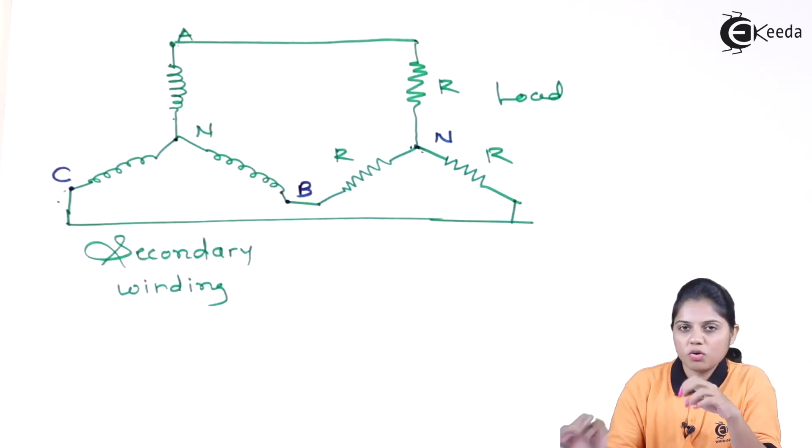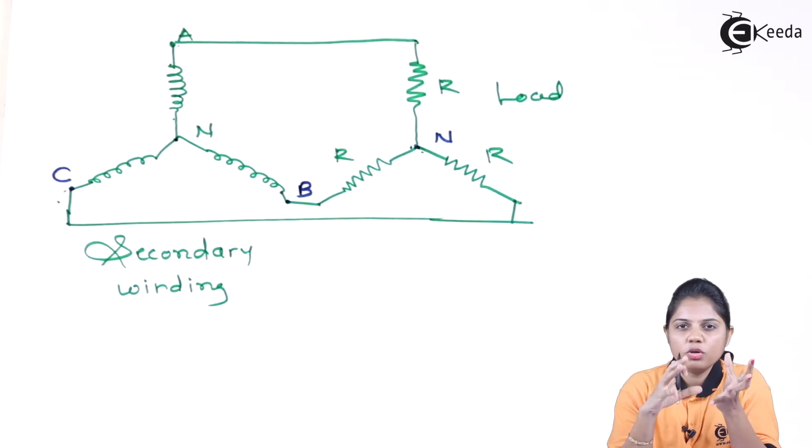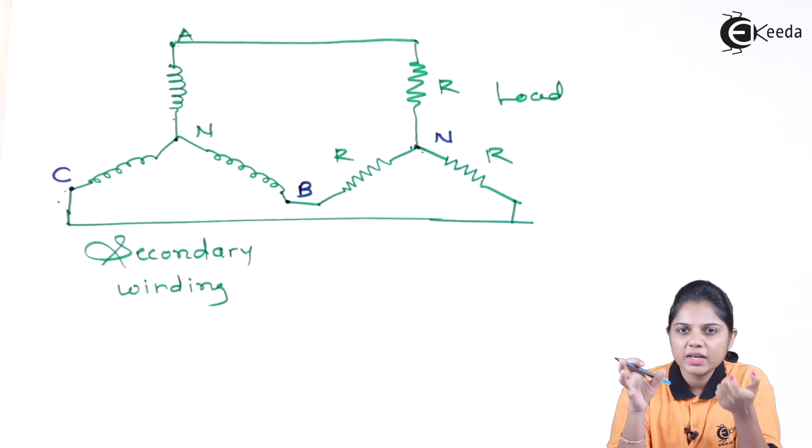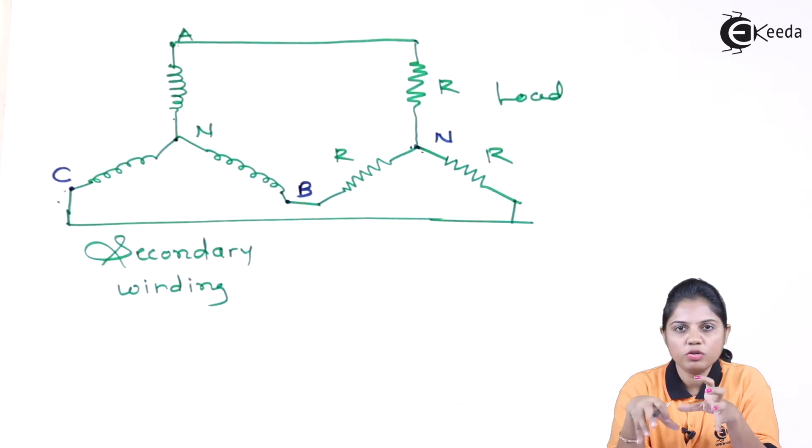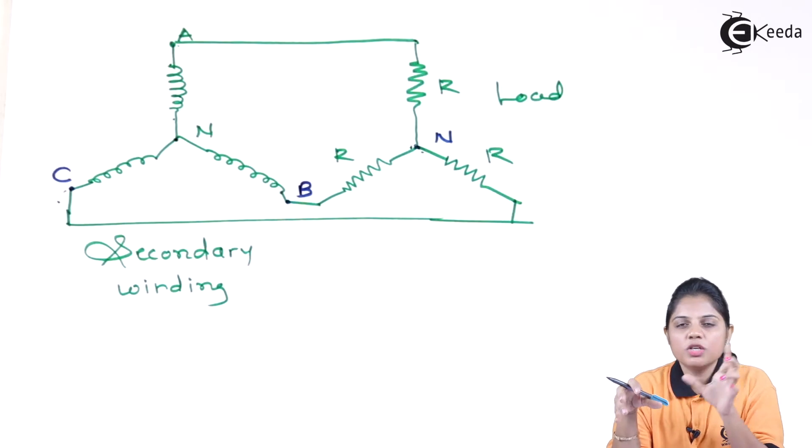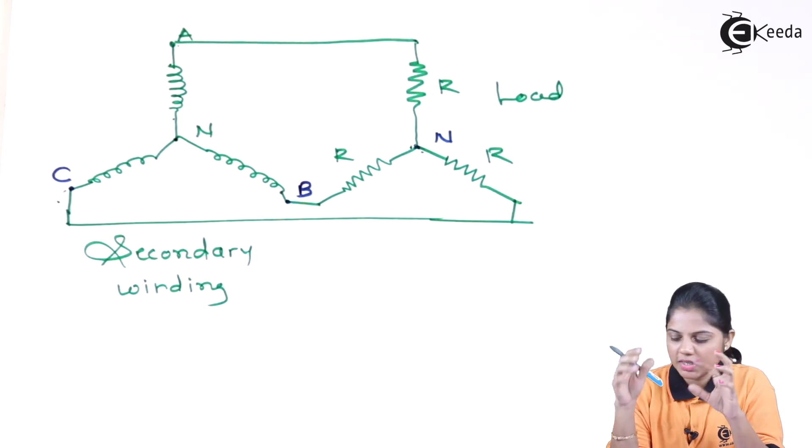Why I am showing you this? Because whenever we will go to see the working principle of three-phase inverter where actually pair of thyristor and diode will be connected, at that point of time I am not going to show the whole diagram but I am just going to show you the point A, B, C. So you should know what is point A, B, C.